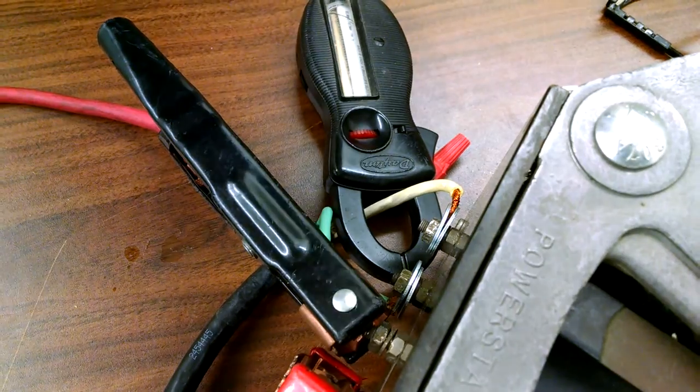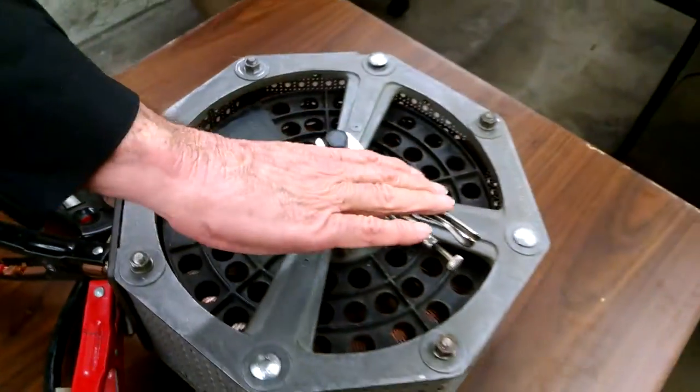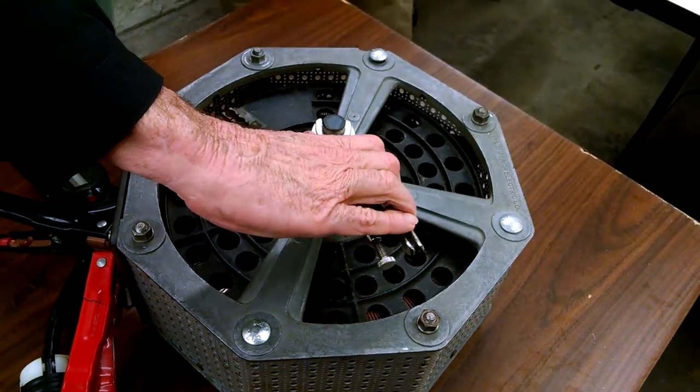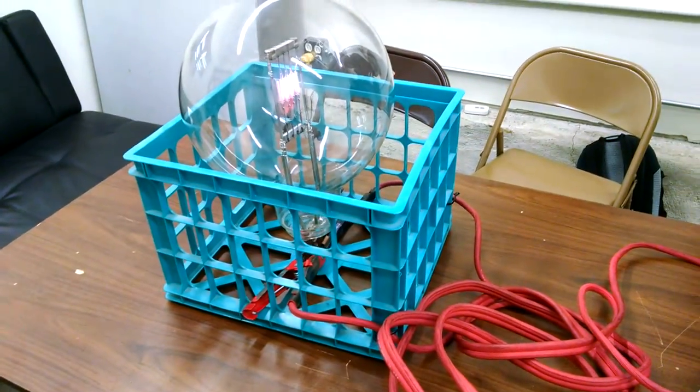And we can vary that voltage by cranking this lever here. As you can see when we do that, it's going to activate the lamp.